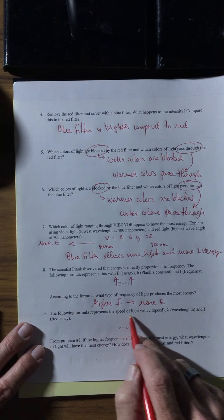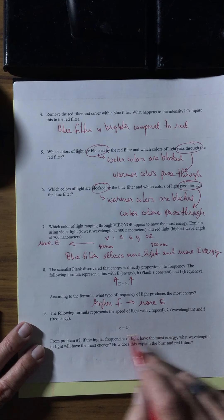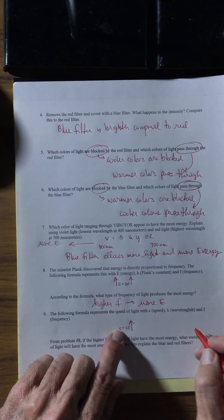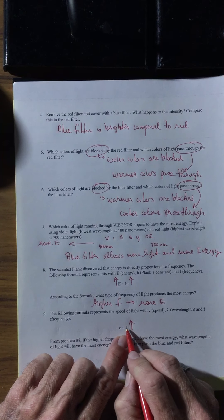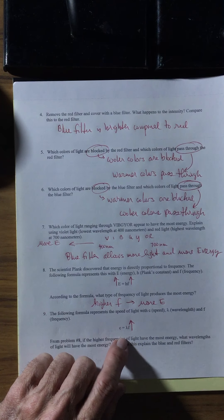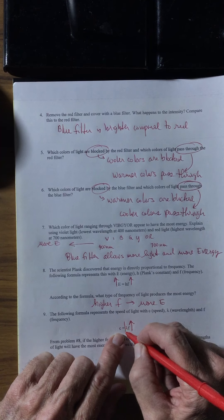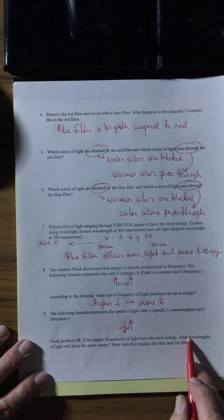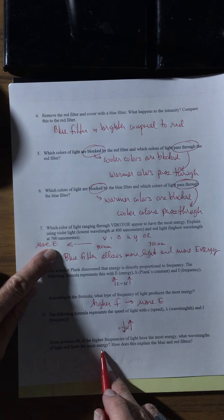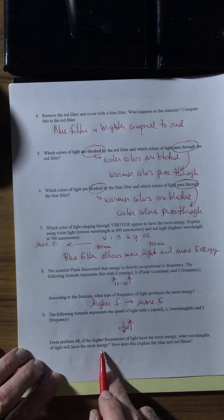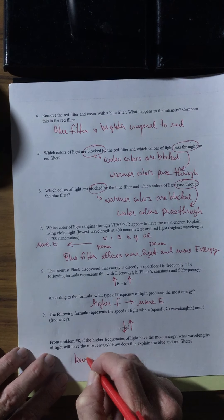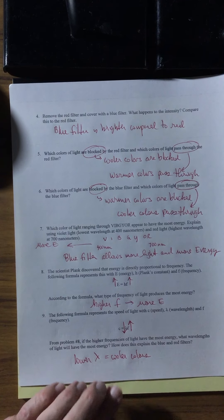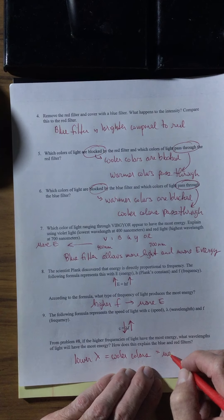The formula for the speed of light is: speed of light equals wavelength times frequency. If we have a higher frequency, remember the speed of light is constant, so what does the wavelength have to be? Frequency and wavelength are inversely proportional, so if speed doesn't change, we have to have a lower wavelength. If higher frequencies of light have the most energy, then lower wavelengths have the most energy. The cooler colors have the most energy — lower wavelength equals cooler colors, and the cooler colors have more energy.